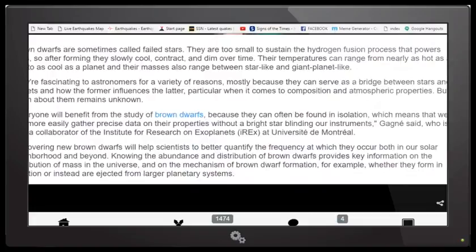The article goes on to state that brown dwarfs are sometimes called failed stars. They are too small to sustain the hydrogen fusion process that powers stars. So after forming, they slowly cool, contract, and dim over time. Their temperatures can range from nearly as hot as a star to as cool as a planet. And their masses also range between star-like and giant planet-like.